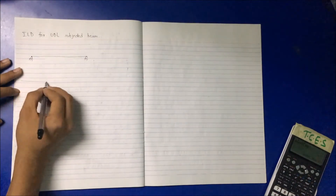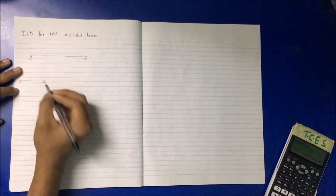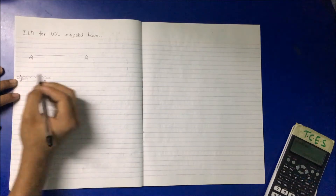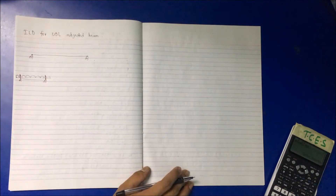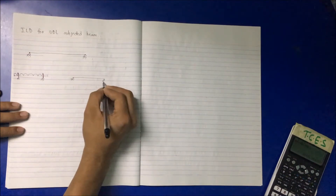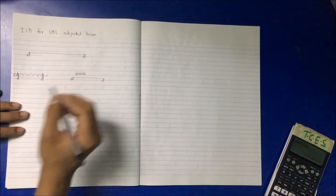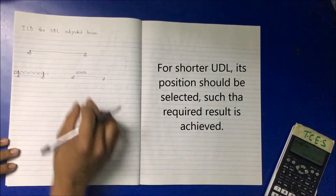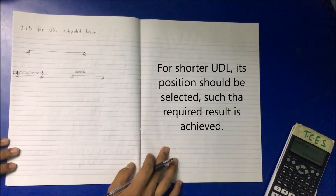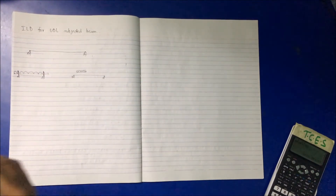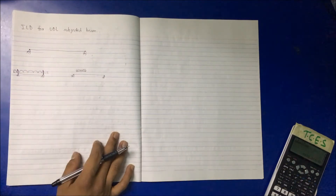If the beam has a certain span and the UDL covers only part of it, only that portion is considered — the remaining portion is not considered for constructing the ILD. Similarly, if the UDL is shorter than the span, it will be positioned at the required location on the ILD.